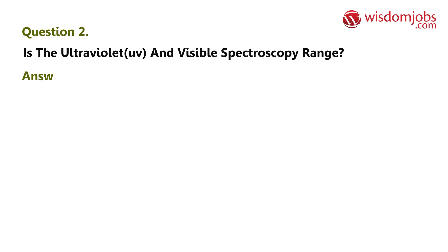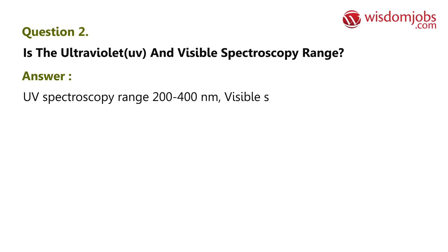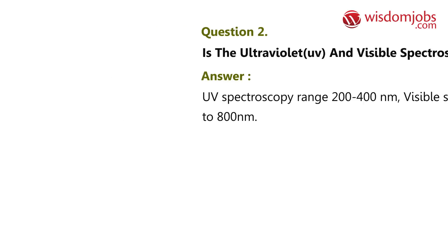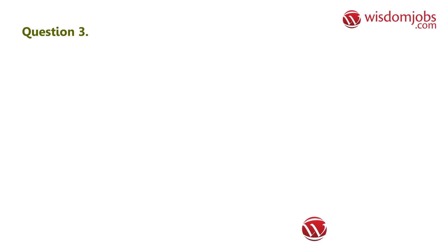Answer: UV spectroscopy range is 200 to 400 nanometers. Visible spectroscopy range is 400 nanometers to 800 nanometers. Question 3: What is the use of spectroscopy?